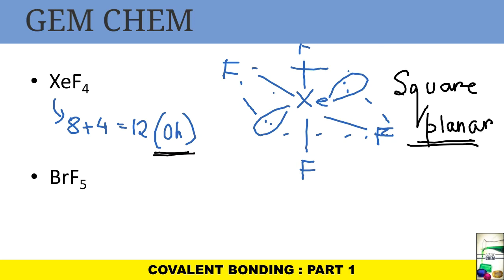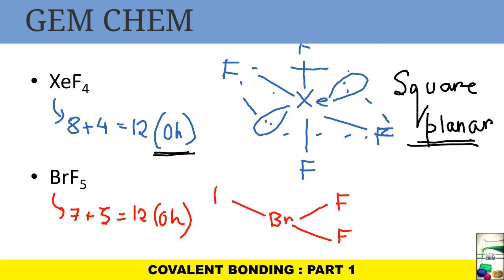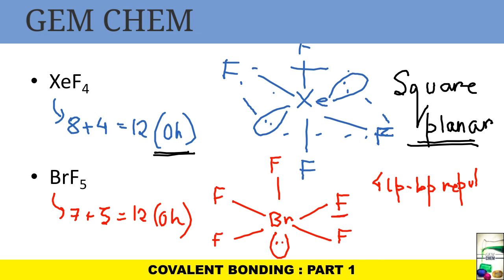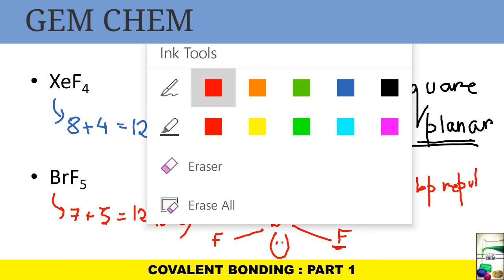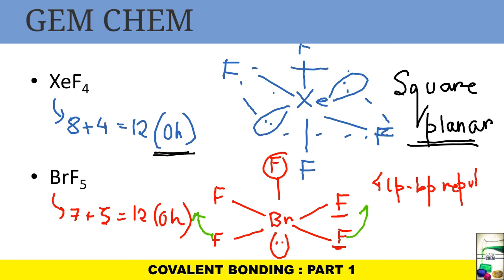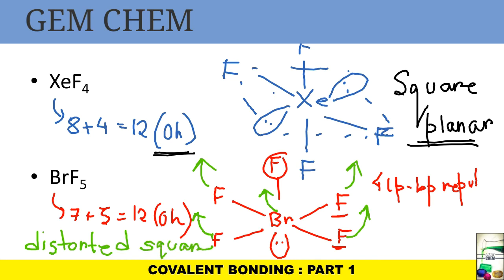For BrF5: bromine has seven electrons plus five from fluorine, giving twelve — octahedral. With one lone pair, it occupies an axial position. There are four lone pair–bond pair repulsions with the equatorial fluorines. Due to this repulsion, the four equatorial fluorines and bromine are pushed upward, giving a distorted square pyramidal shape.